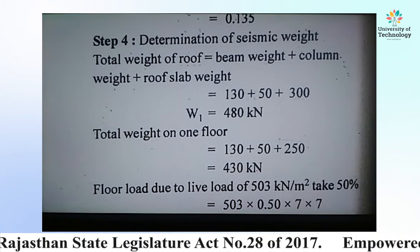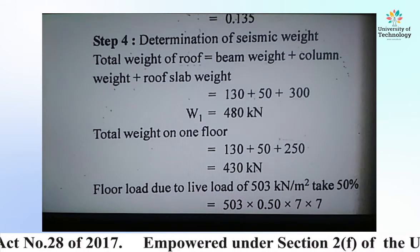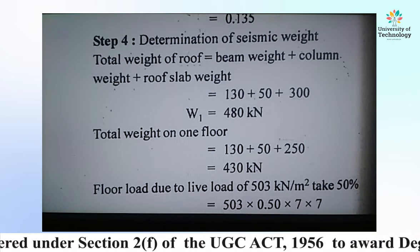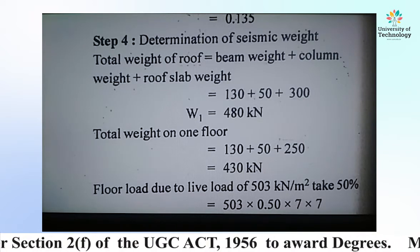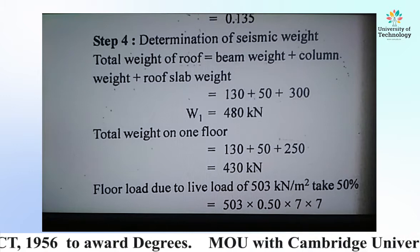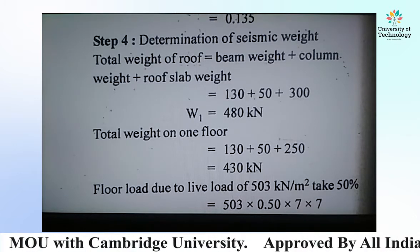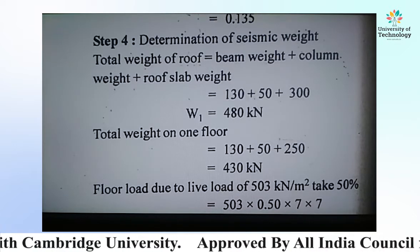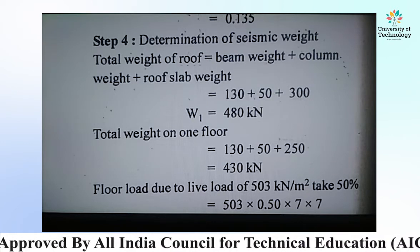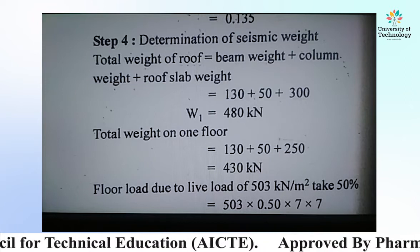Step 4: Determination of seismic weight. Total weight of roof W1 equals beam weight plus column weight plus roof slab weight. This includes the weight of beams, columns, and roof slab. So W1 = 130 + 50 + 300 = 480 kN. Total weight of one floor = 130 + 50 + 250 = 430 kN.